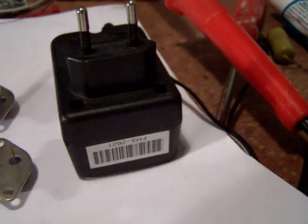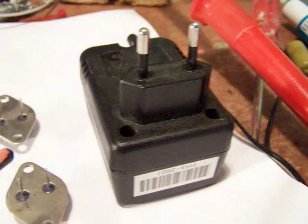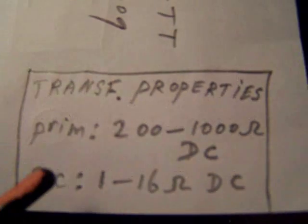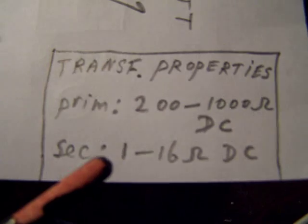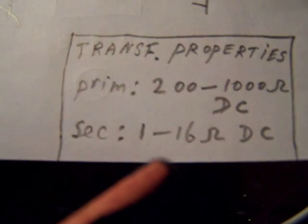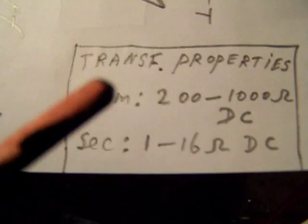Properties of the transformers are here: primary side approximately 200 up to 1000 ohms, secondary side 1 up to 16 ohms DC resistance.